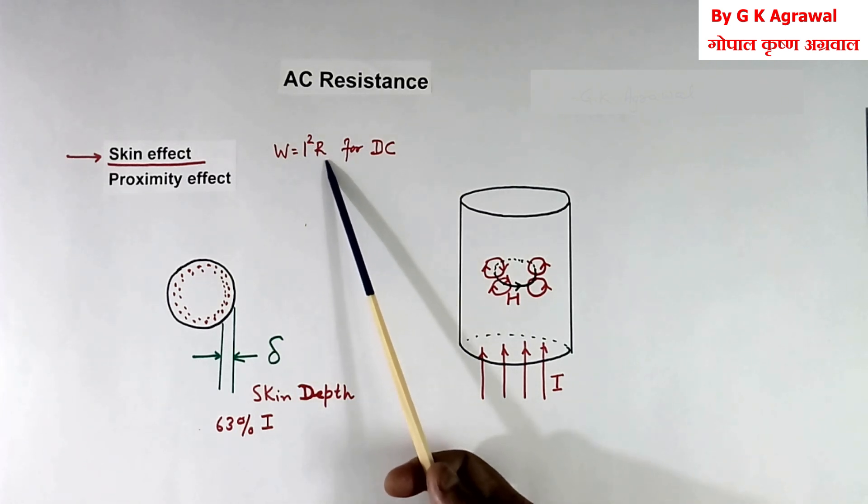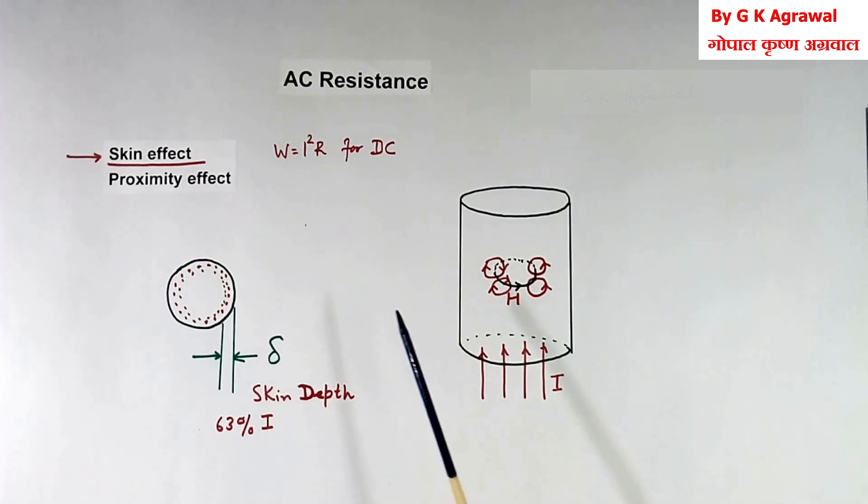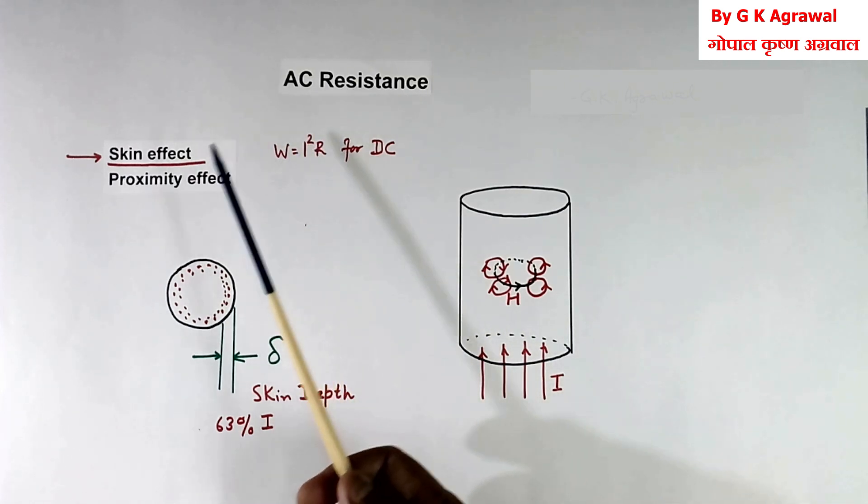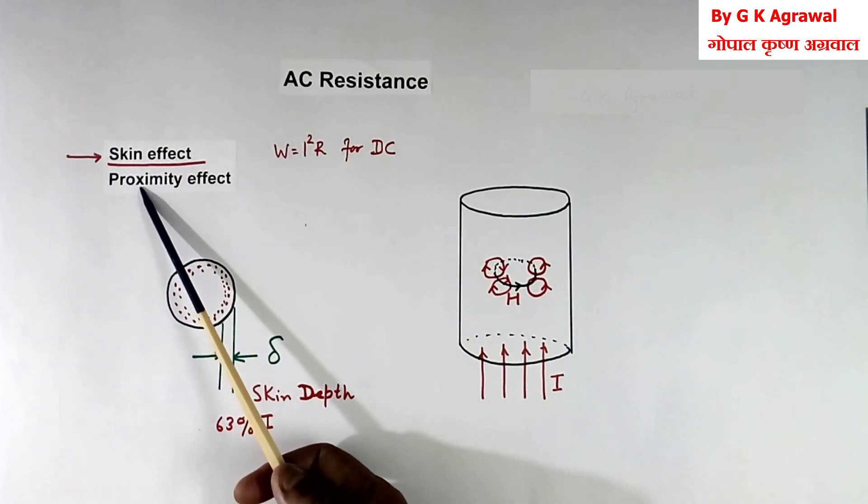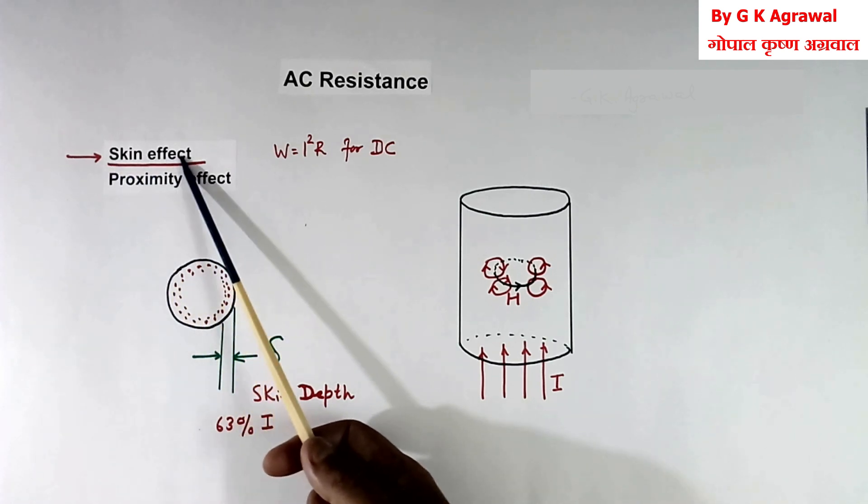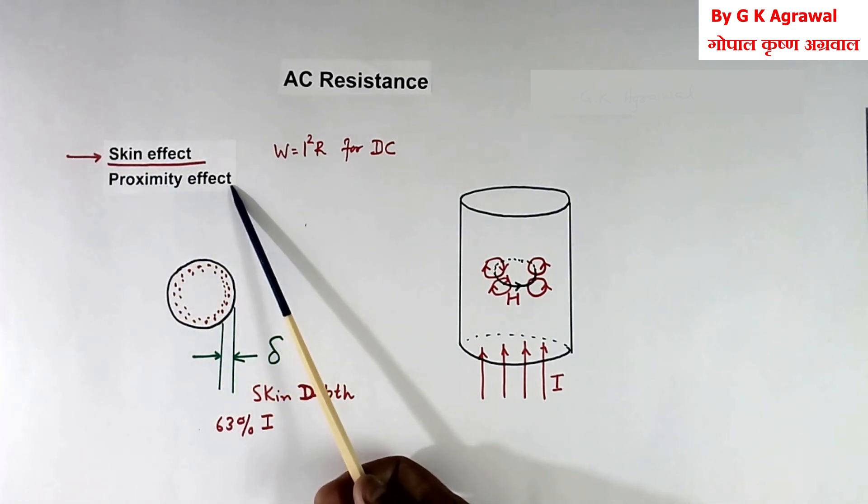This increase in resistance because of higher frequency in AC is because of two reasons. One is called skin effect. Another is called proximity effect.